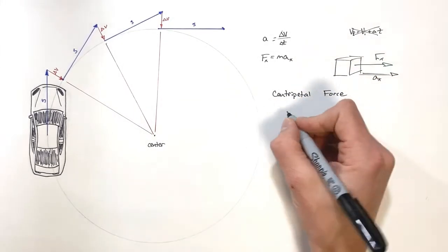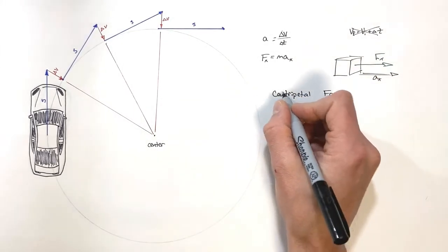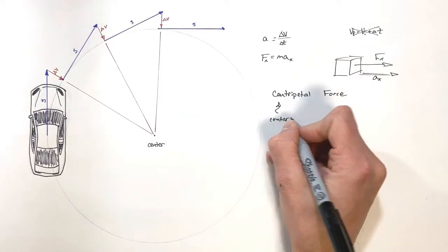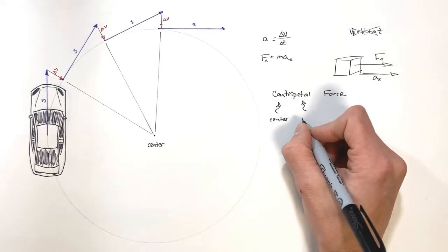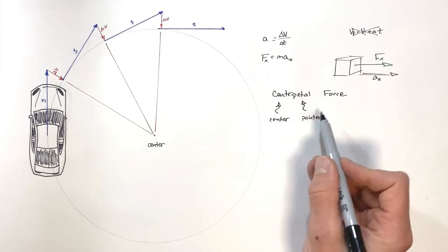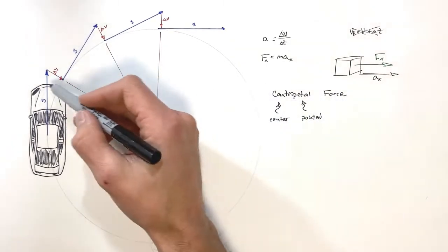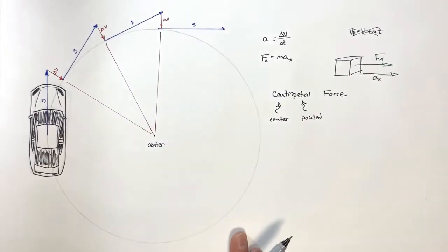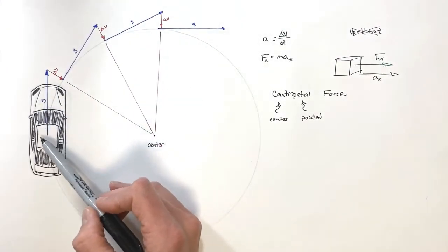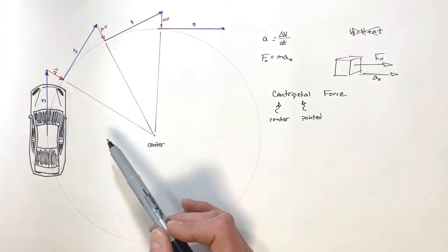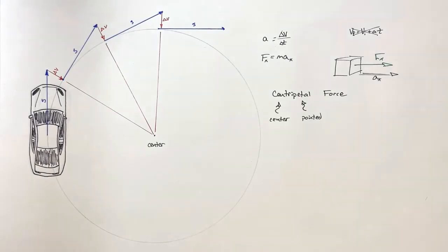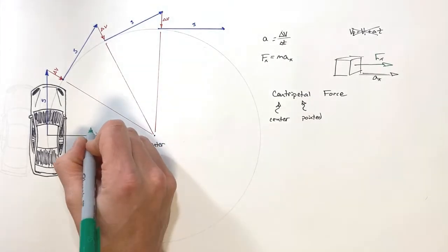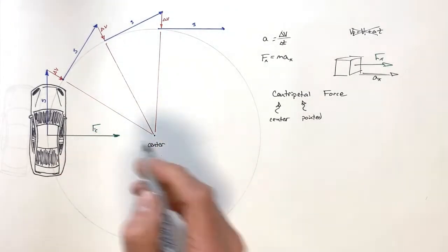This leads us to something called centripetal acceleration and centripetal force. If we look at this word 'centripetal' — 'centri' really just means center, and 'petal,' if we take a few liberties with the translation, really means pointed. So what we have is a center-pointed force, or we can talk about a center-pointed acceleration, which is what we're seeing from this car. When this car goes around a corner, there is a center-pointed or centripetal force acting inward on the car. We're simply going to refer to that center-pointed force as the centripetal force, Fc.